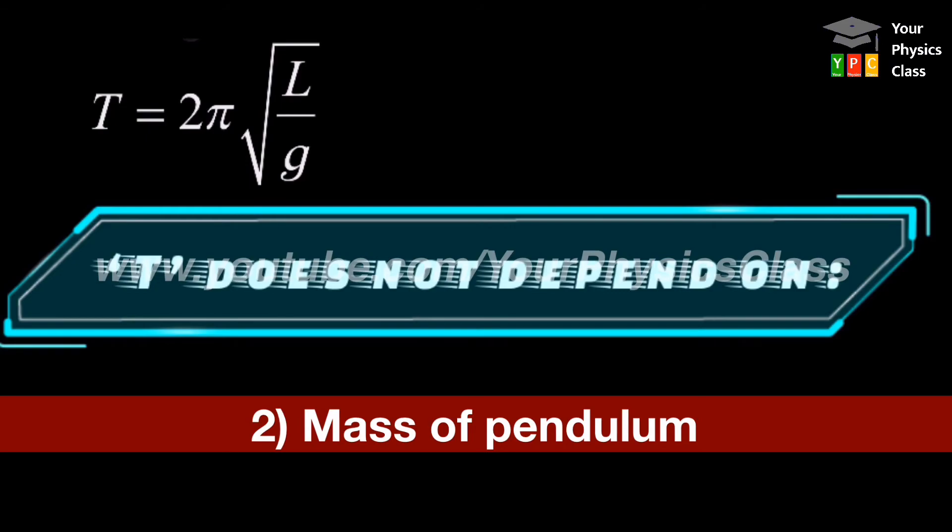If the pendulum has a time period of 1 second, then if its mass is doubled, tripled or many folds, its period will remain as 1 second. That means it remains unaffected.